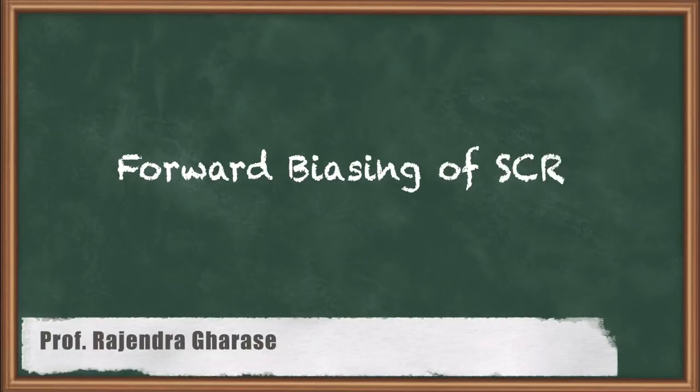Hello friends. In this video we are going to discuss about the forward biasing of the SCR. In the last video we discussed about the construction of the SCR. As we know the SCR is a four-layer and three-junction device, having four layers P, N, P, and N, and three junctions J1, J2, and J3.